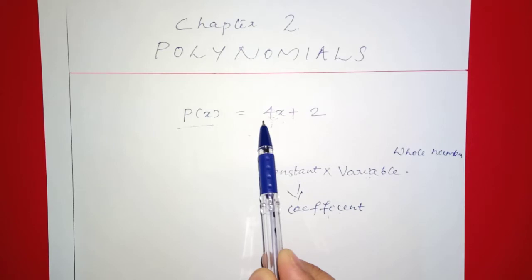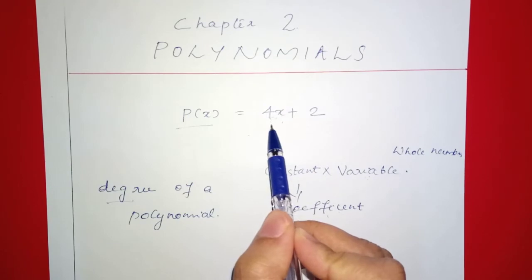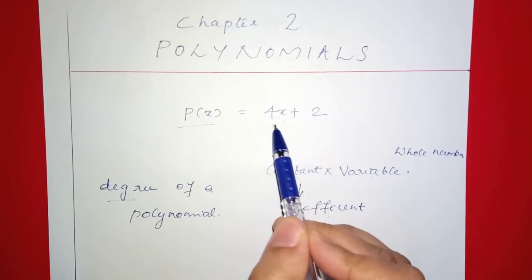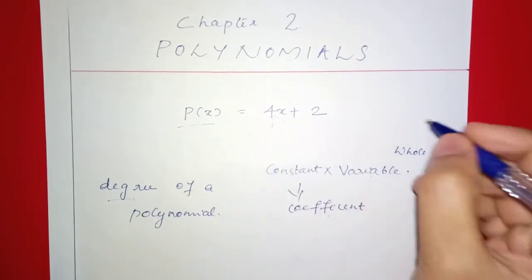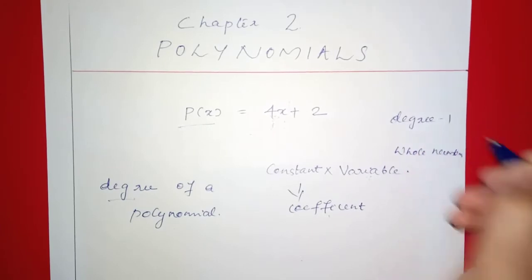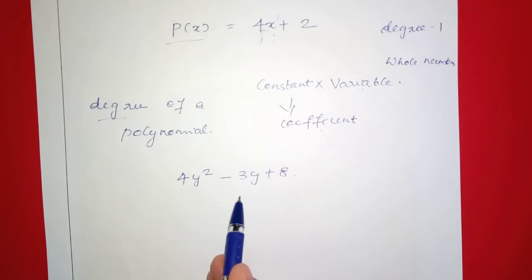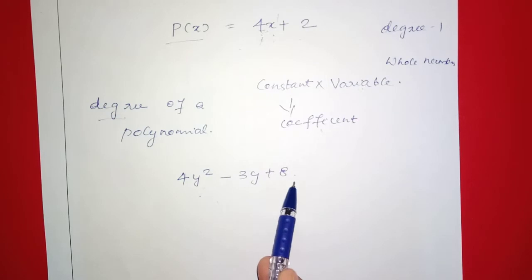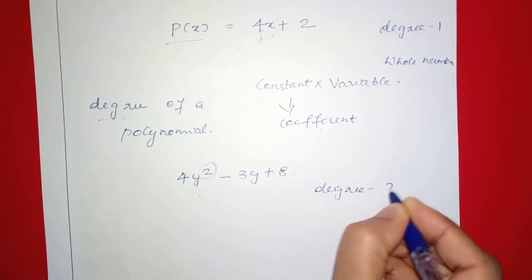This is the coefficient of x. In this case, there is a term. This is the term of x. In this case, the coefficient of x is 1. So this is the polynomial. It is 4y, and this is the degree of this polynomial.